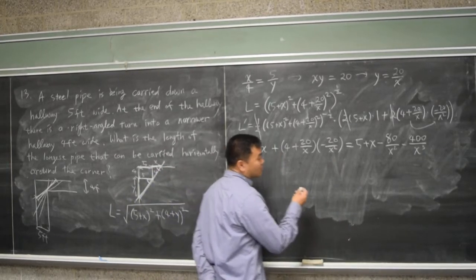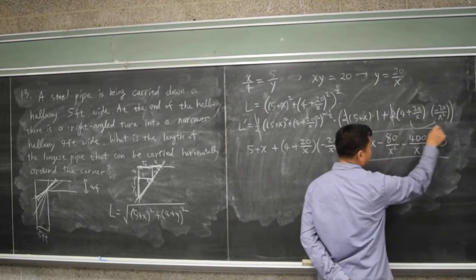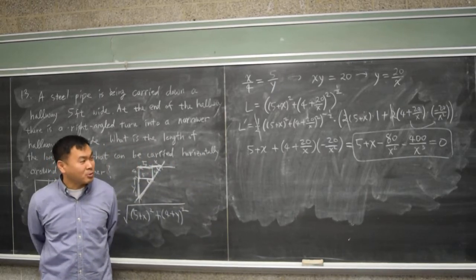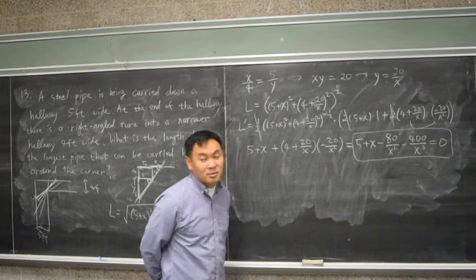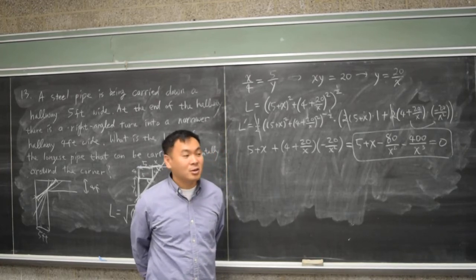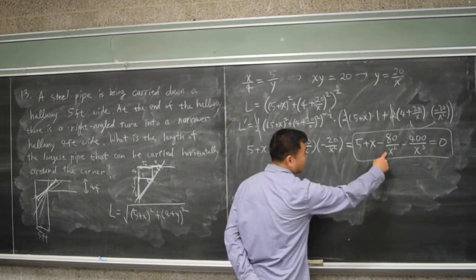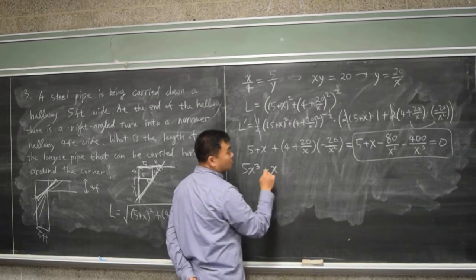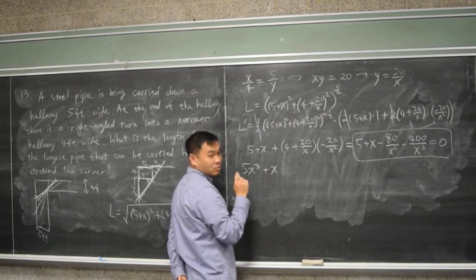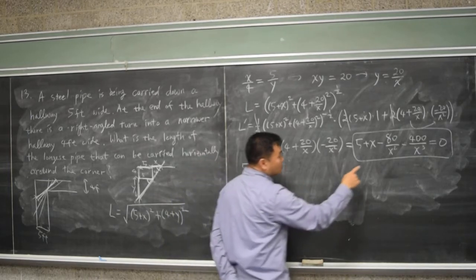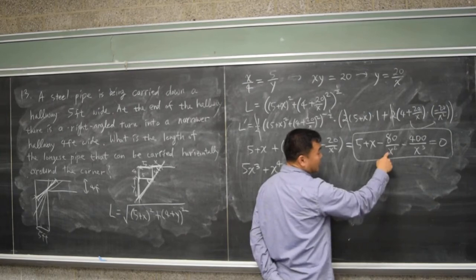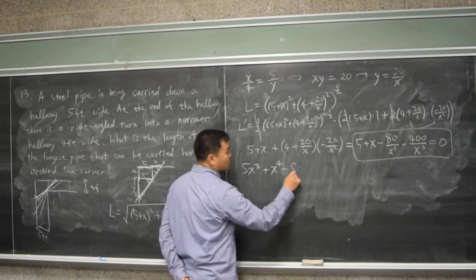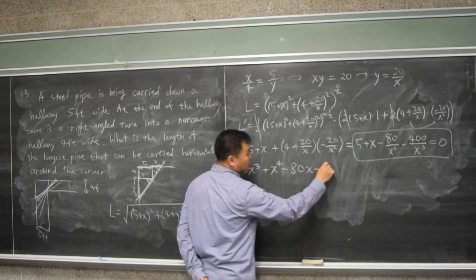We need to find when this equals zero. First, get rid of the fractions by multiplying through by x cubed, which cancels both denominators. That gives five x cubed plus x to the fourth minus eighty x minus four hundred equals zero.